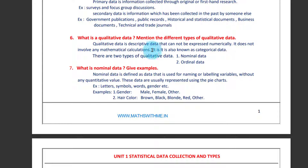What is qualitative data? Qualitative data is also called as non-numerical data. It is a descriptive data that cannot be expressed numerically. Qualitative data does not involve any mathematical calculation.